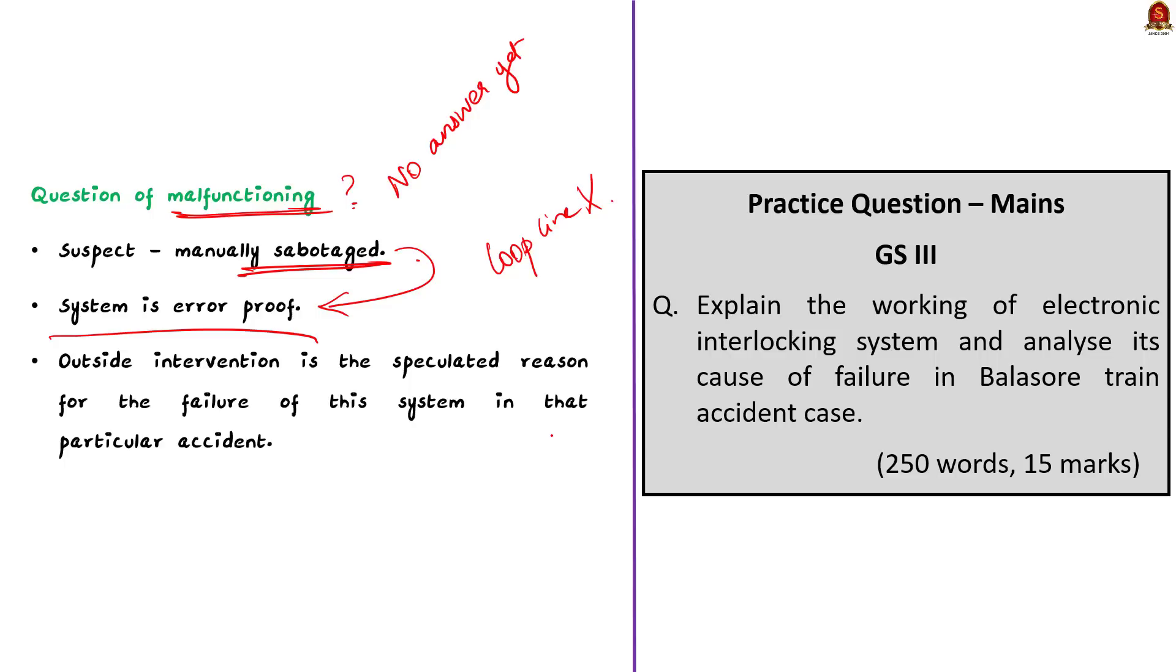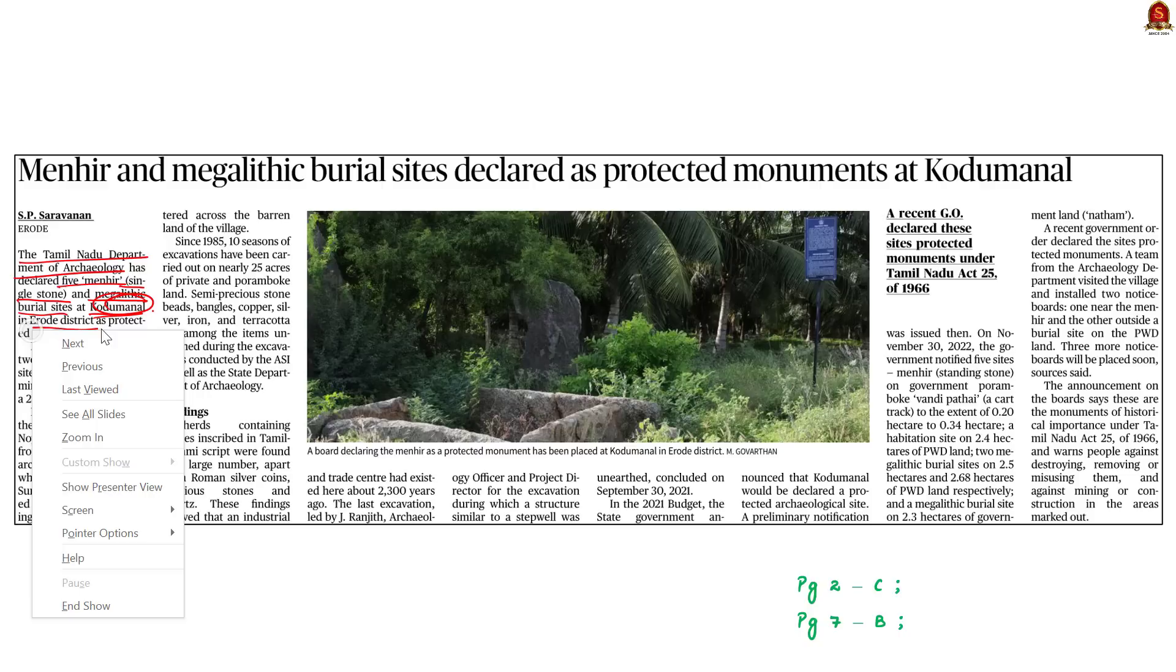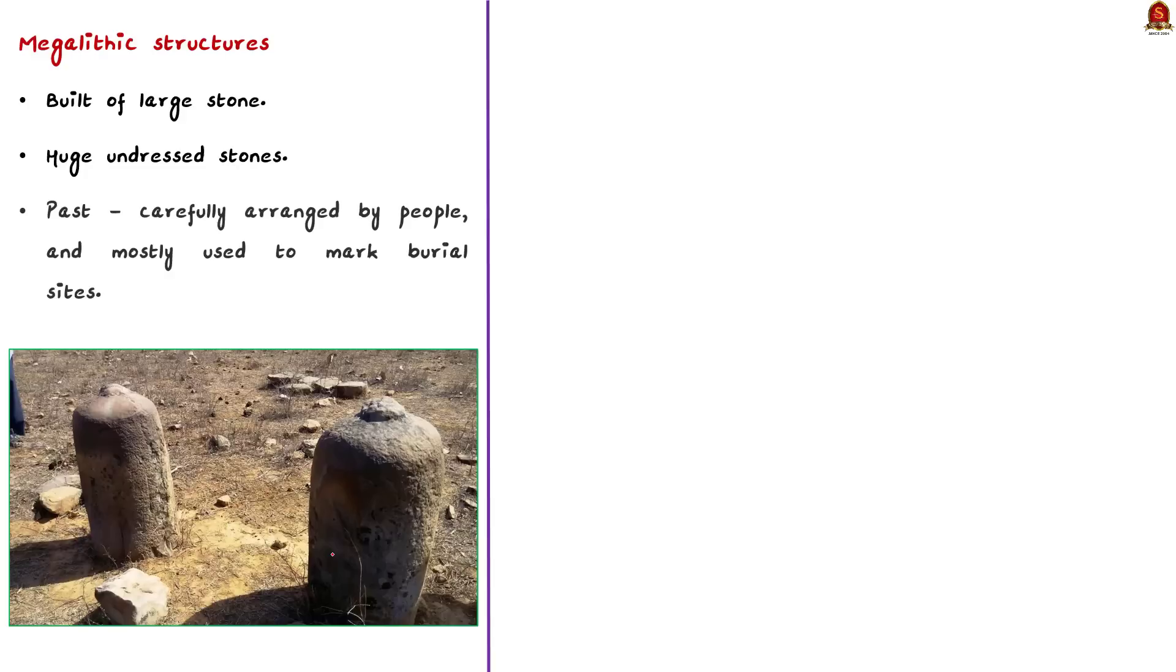According to this news article, the Tamil Nadu Department of Archaeology has declared five menhirs, i.e. single stone and Megalithic burial sites at Kodumanal as protected monuments. Kodumanal is located on the northern banks of Noyal and about 42 km from the Erode district in Tamil Nadu. It was made an archaeological site in 1961 itself. In this background, let us learn about Megaliths. So, what are Megaliths? Here, Mega means large. Lithic means stone. So, Megalith means built of large stone. And a Megalith site means a site having large stone structures.